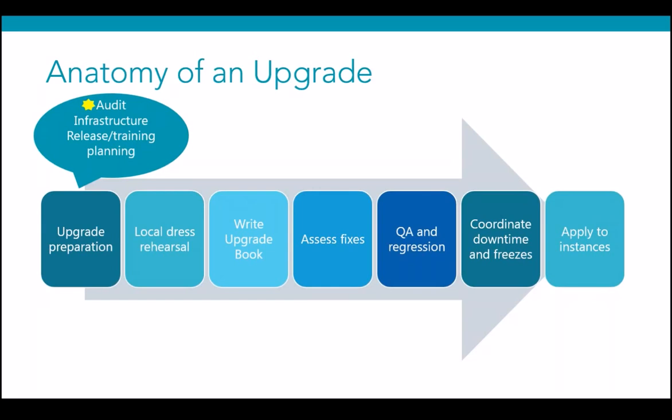This includes planning content freezes and downtime of various environments. We do a local dress rehearsal: we take an entirely local, isolated environment where we can play, follow the exact steps needed, and write what we call an upgrade book — recording for each step what was done, what obstacles were encountered, and what the workaround was. When you apply the upgrade to the rest of your environments, you can go step by step and have a broader team follow along.